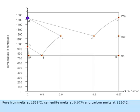Pure iron melts at 1539 degrees centigrade, cementite melts at 6.67 percentage, and carbon melts at 1550 degrees centigrade.